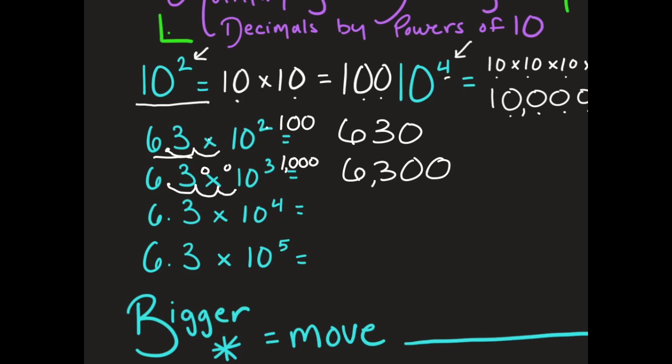What you're doing is moving the decimal point. When my decimal point was here showing I had a tenth, it's now at the end — really 0.0. You don't have to write it there, but this shows that when multiplying and dividing, we're changing the place value and moving the decimal point.